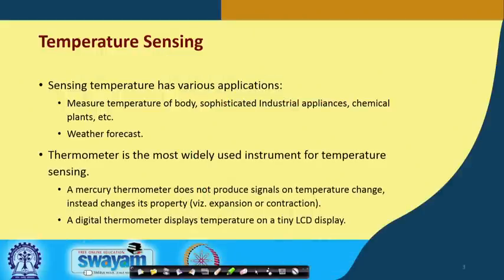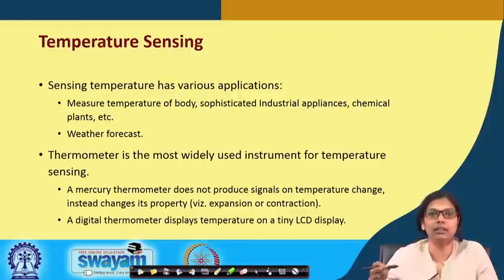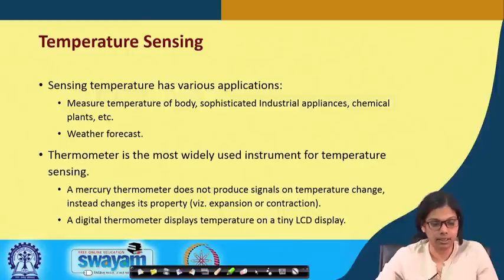What is temperature sensing? Temperature is a physical parameter we all know. Sensing temperature has various applications. It measures the temperature of the body. It is also used in sophisticated industrial appliances. It is used in chemical plants where it is needed to monitor the temperature, and depending on that temperature certain devices may be required to be switched on or off. Weather forecast is also one application.